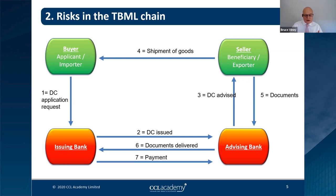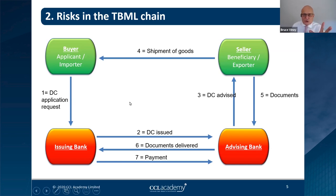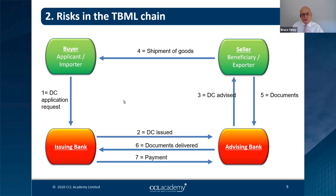Documents of title, commercial documents, and shipping documents are sent to the advising bank, which checks they are in accordance with the documentary credit requirements. Documents are then sent back to the issuing bank and payment goes out. This is very simplified — you can have third parties, different types of letters of credit, and more. The key point: be very clear what role your organization is taking in any particular trade, and understand how to assess the risks.